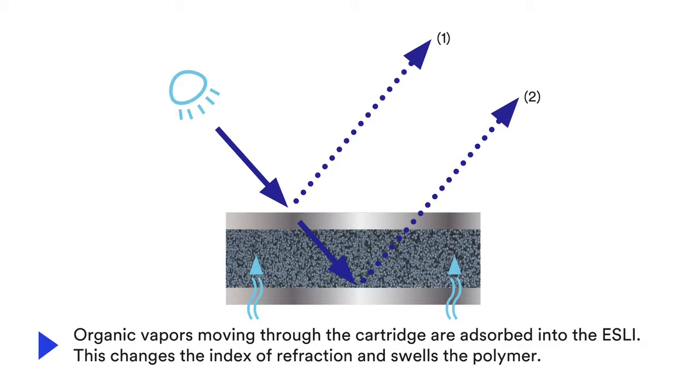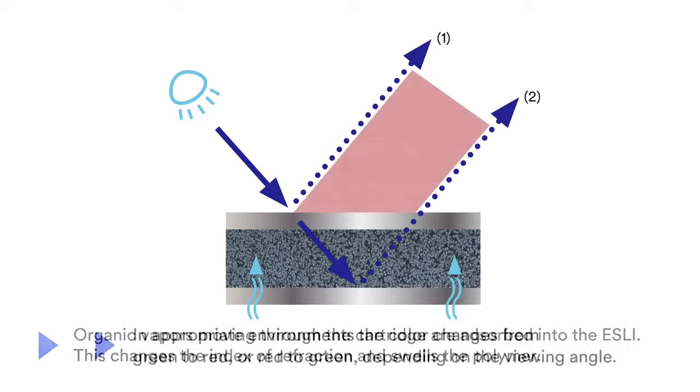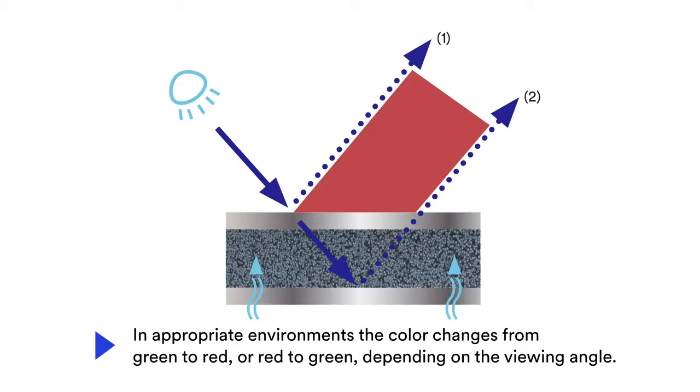Organic vapors moving through the cartridge are adsorbed into the ESLI. This changes the index of refraction and swells the polymer. In appropriate environments where the concentrations of specific organic vapors are above certain levels, the color changes from green to red, or red to green depending on the viewing angle. As more vapor is adsorbed into the end of service life indicator, the color shifting becomes stronger.